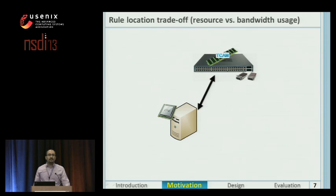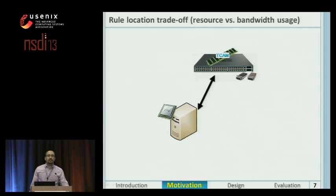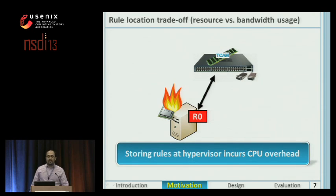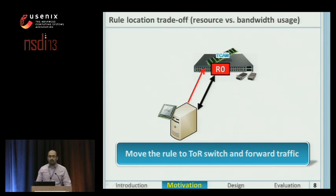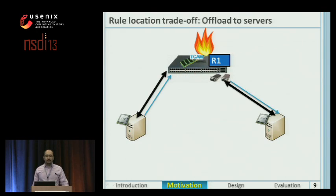So it is not always possible to save the rules on the ideal place, and we need to offload them. In this work, we use the fact that rule location creates a trade-off between resource usage and bandwidth usage in the data center. For example, whenever a hypervisor is overloaded, we can move the rule to the top-of-rack switch. As a result, we need to forward traffic there, and we may have traffic overhead if the rule is denied. If the top-of-rack switch is full, we may decide to offload rules to other servers or switches.